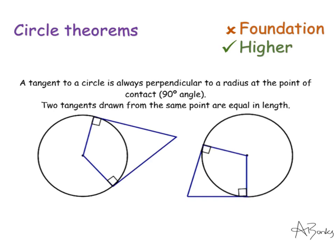In this example I've combined two circle theorems: the first is that a tangent to a circle will always be perpendicular — at a right angle — to a radius drawn at the point of contact. The second theorem, which very often attaches to the first, is that two tangents drawn from the same point are equal in length. You very rarely see the second one without the first, and because these are both radii, it will be 90-degree angles on either side.